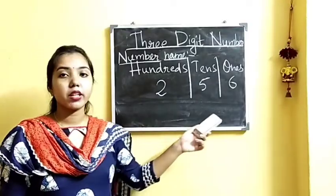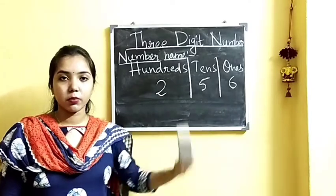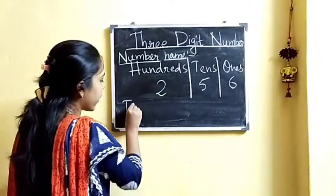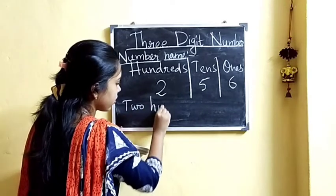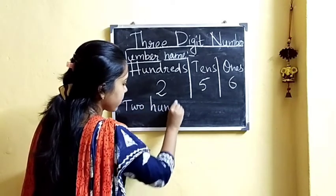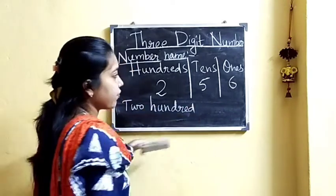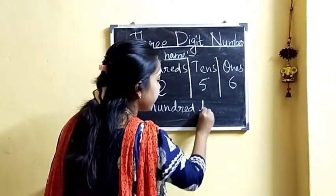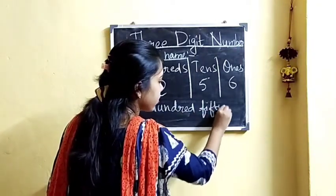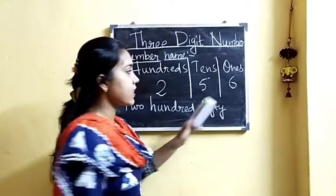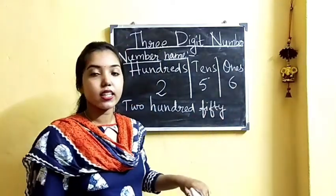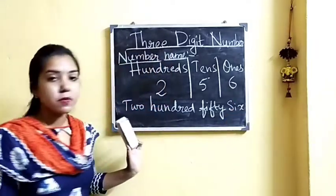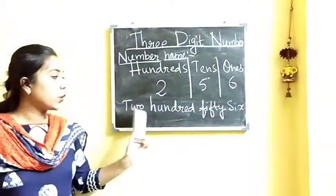Now we will write the number name of this number. Here 2 is at the 100s place, so we will write 200. 5 is at the 10s place, that means 50, so we will write 50. And 6 is at the 1s place, that is 6. So the number name becomes 256.